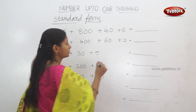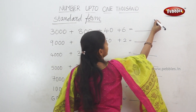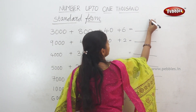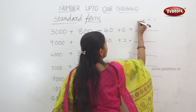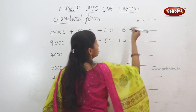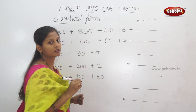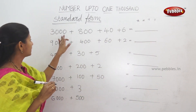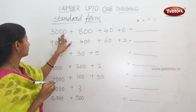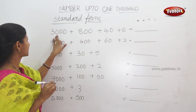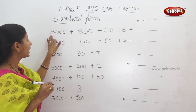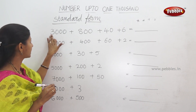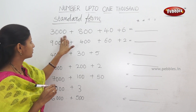First, place values. Easy count: ones, 10s, 100s, and 1000s. So, first number: ones, 10s, 100s, and 1000s. And here, how many 1000s are? 3000s.